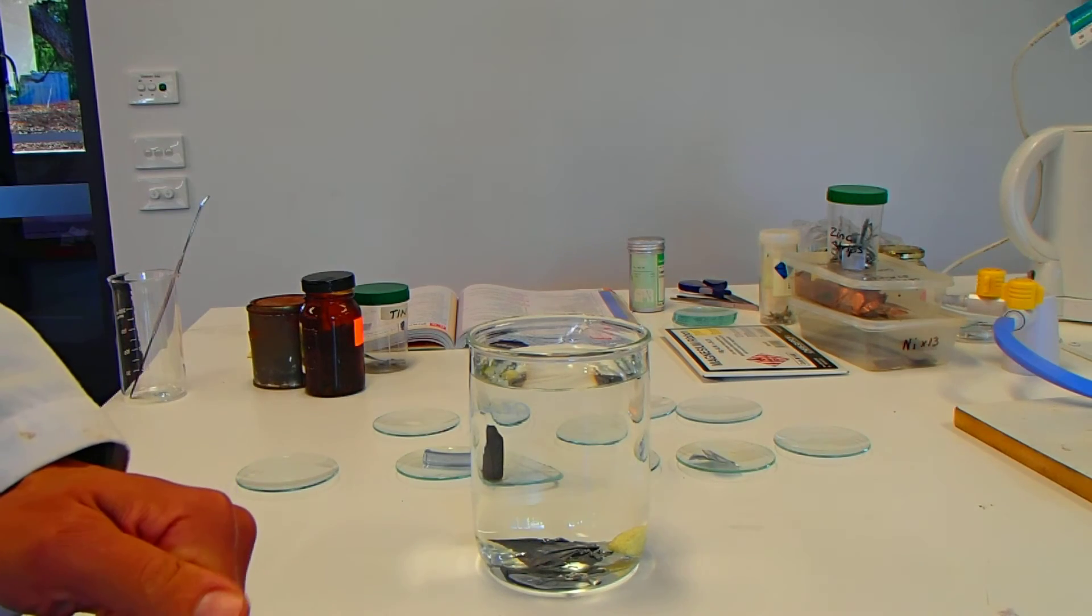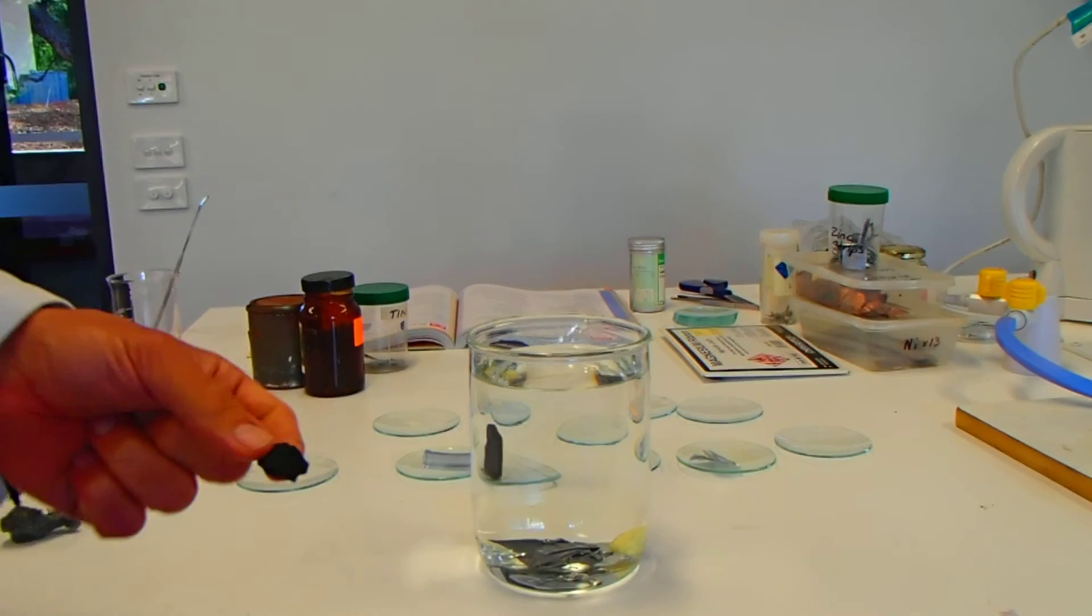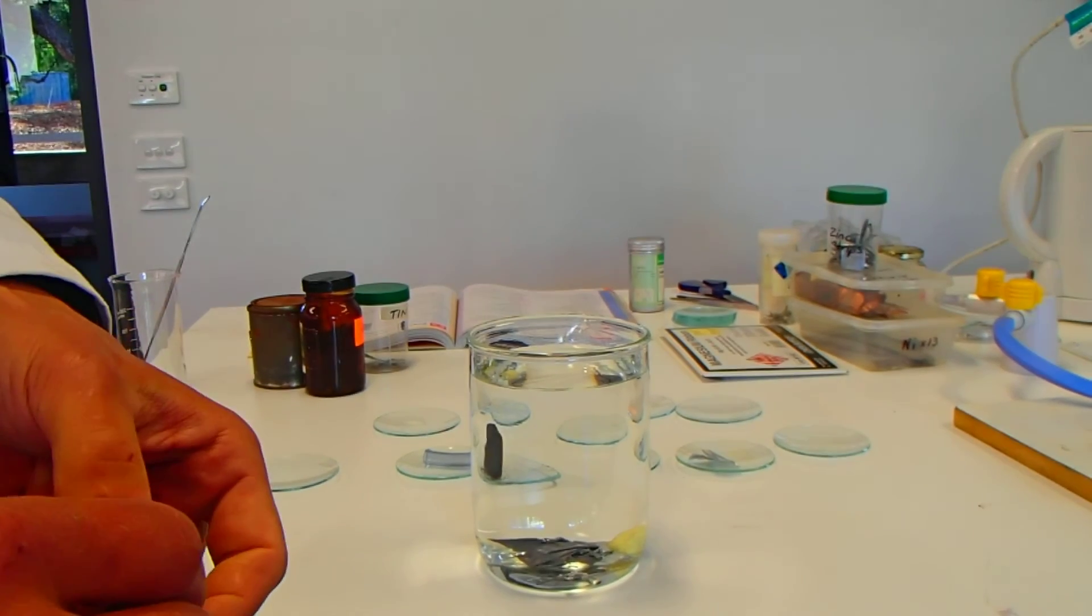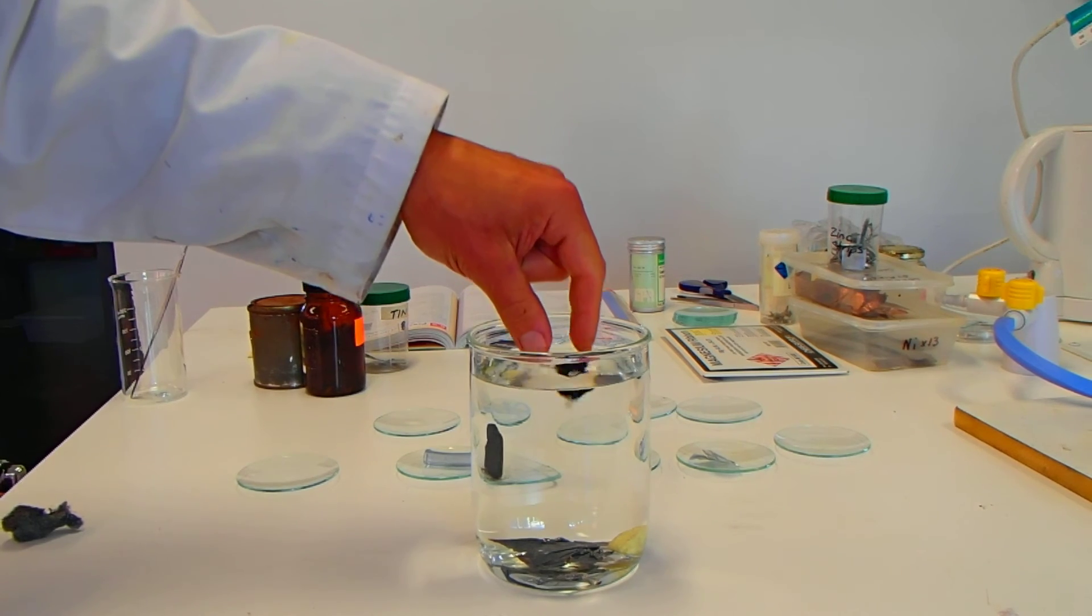But all of those went down that are in there. Let's have a look at the carbon. So, the things that have floated so far: aluminum, silicon and magnesium to a lesser extent. Let's have a see if the carbon floats.